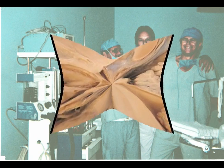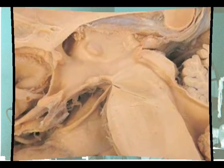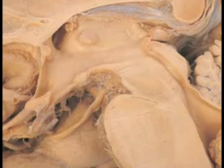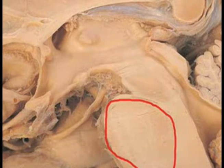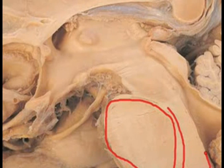This is a gross specimen of a real human brain at the level of the diencephalon and part of the brain stem. We can see the pons right here, and this area would be the pons tegmentum area right here.